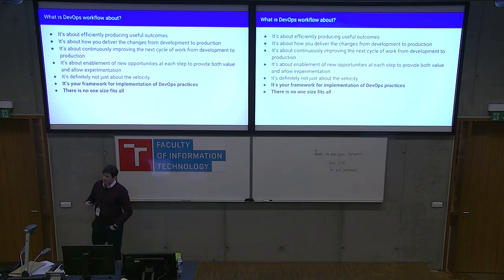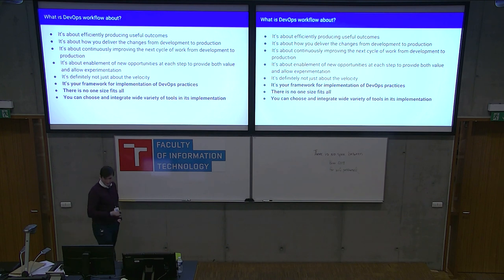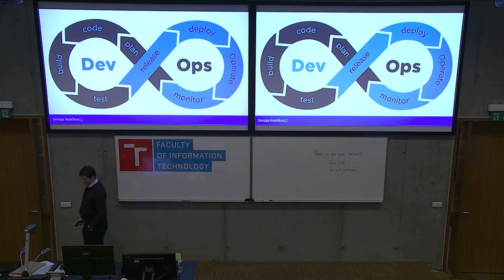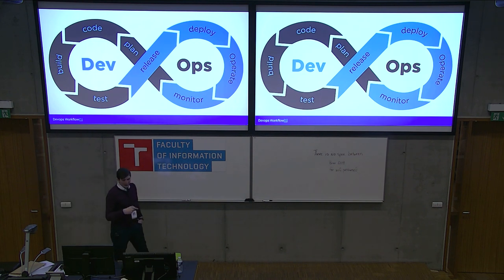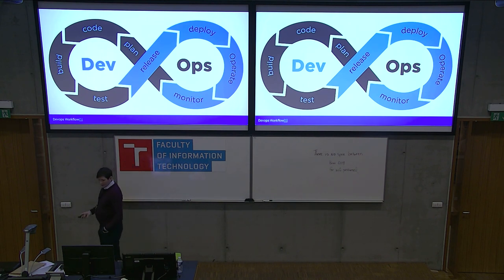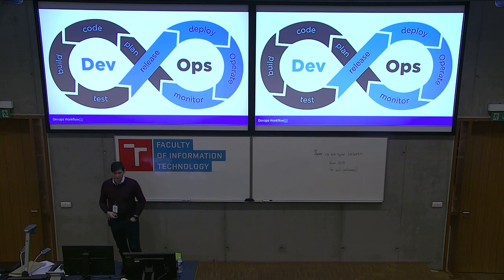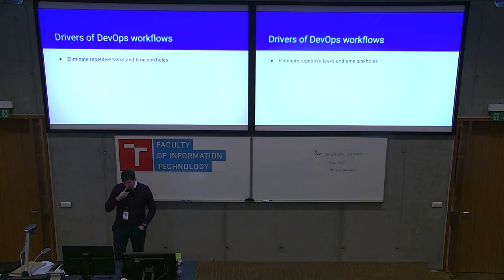DevOps workflows can be implemented in various ways by various tools, and it's very dependent on how your organization is structured and what best fits your use case. This is usually how people depict those workflows — an infinite cycle going from planning and implementing software changes through building, releasing, deploying, operating in production, and then back through monitoring and introducing patches or enhancements.